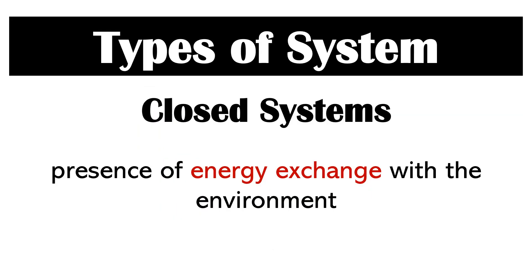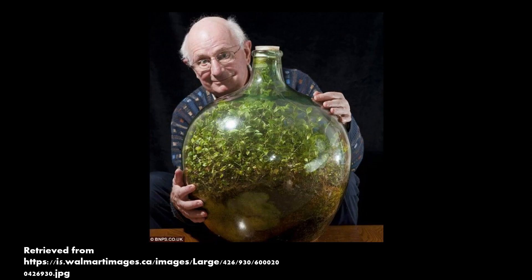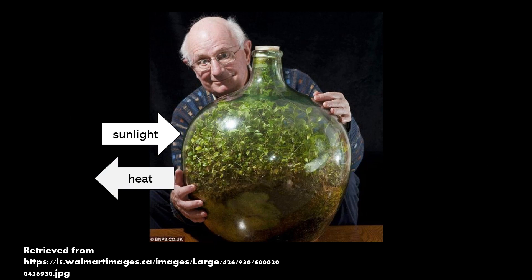Now let's go with the definition of a closed system. Take note that in a closed system, there is a presence of energy exchange with the environment. This terrarium illustrates a closed system — it is teeming with life and was only watered once 40 years ago. Life still survives inside it because energy is still flowing inside and out of it.